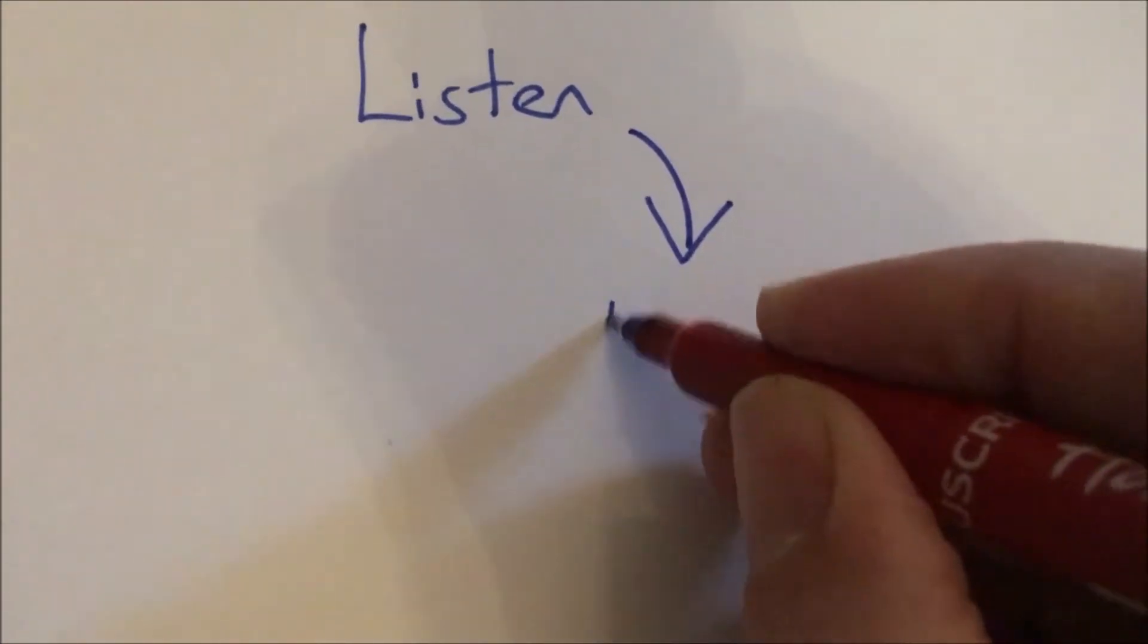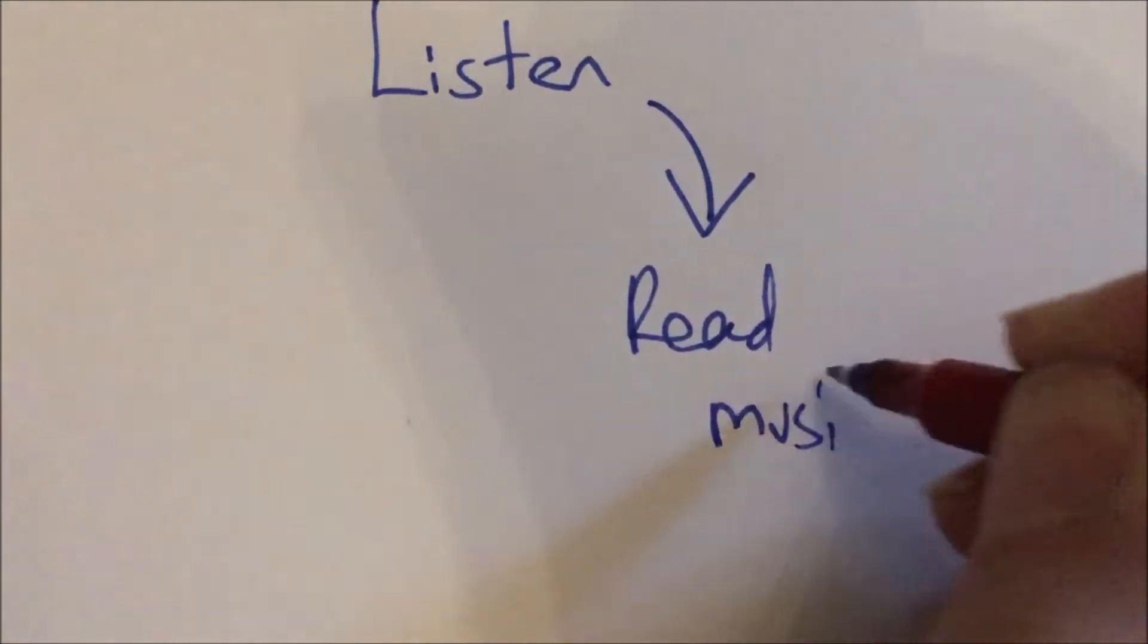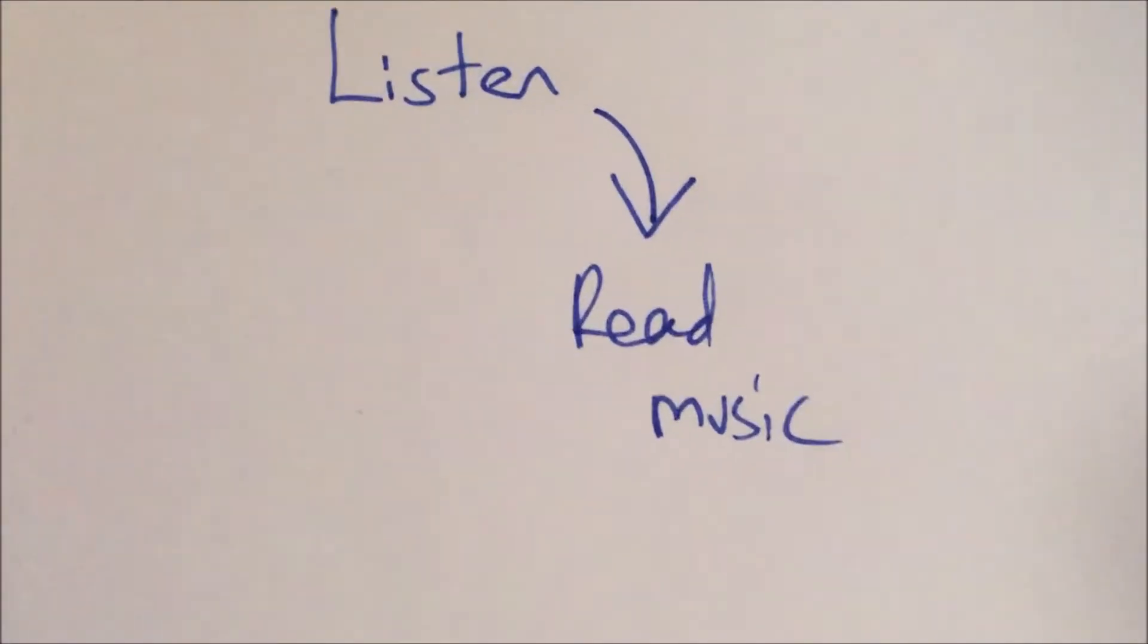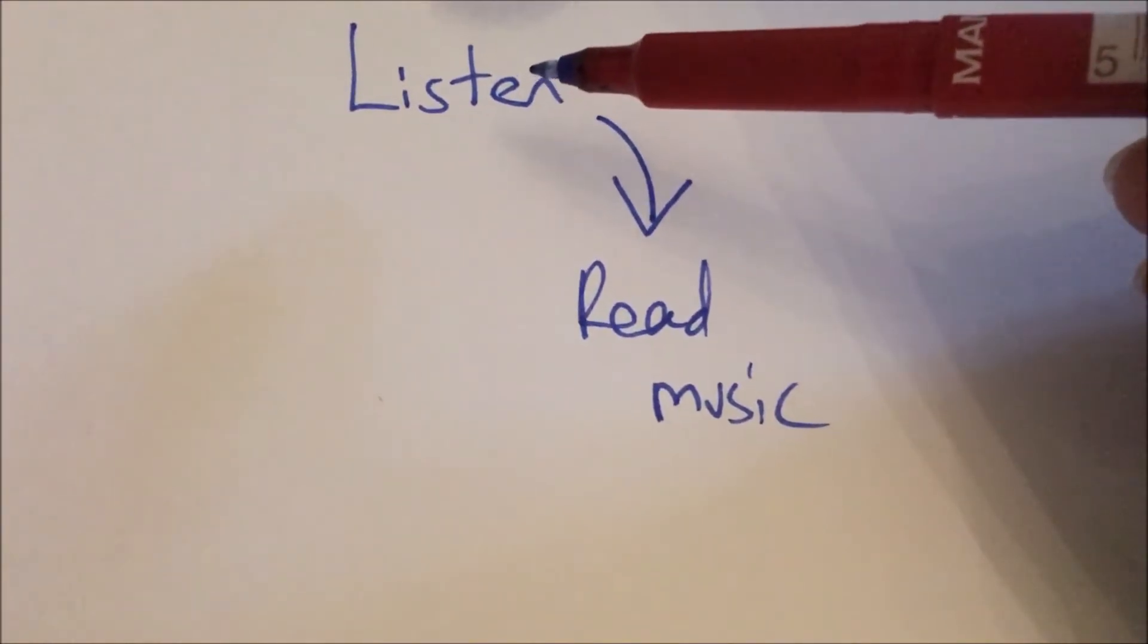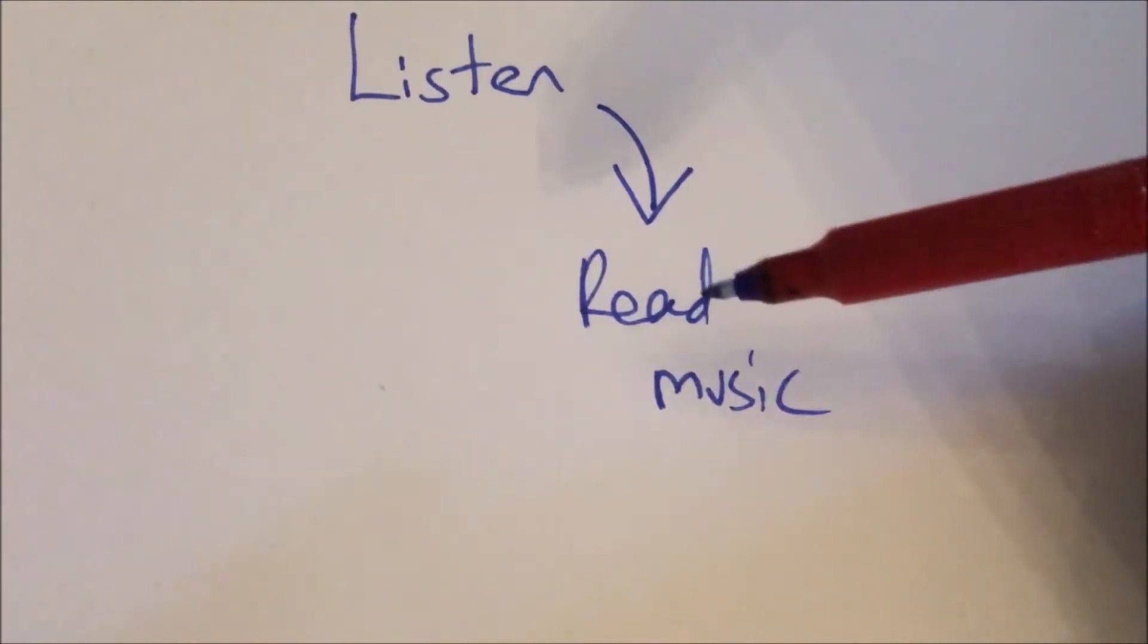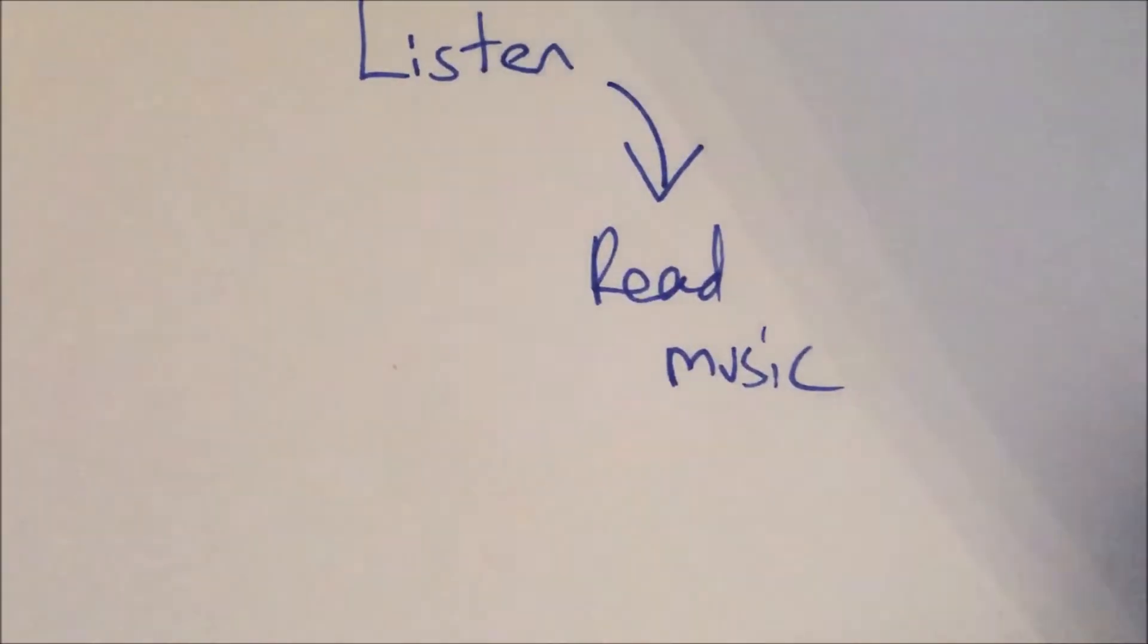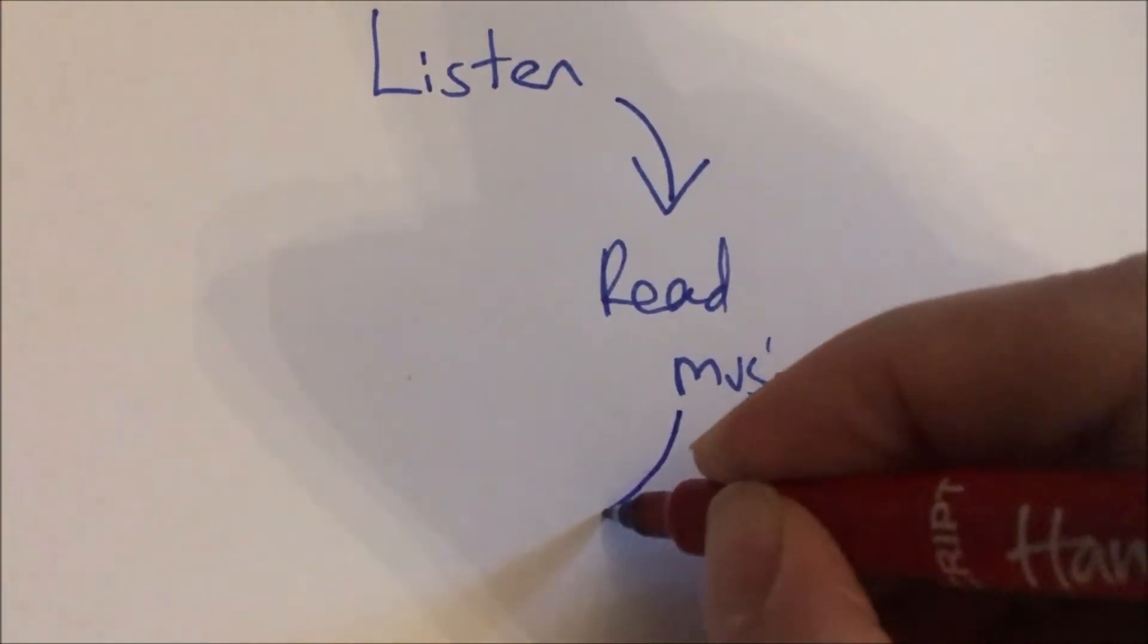After you've listened to some music, you need to be able to read a bit of music. Why do we need to be able to read music? Because if we want to play the music that we've just listened to, it's going to be useful for us to look at it written down and go, 'Ah, I see how it goes.' It's going to help you to be able to play it.